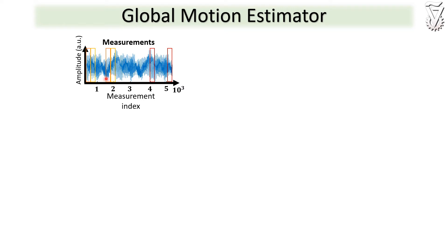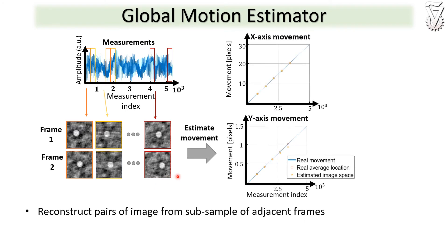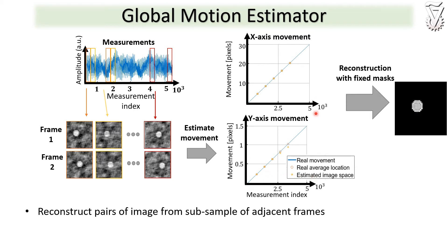In our global motion estimator, we use our measurements from multiple frames to reconstruct pairs of images from some samples of adjacent frames. We then use cross-correlations between the reconstructed pairs to estimate the motion in both axes. Once the motion is estimated, we incorporate the motion in an optimization problem and recover our final image.